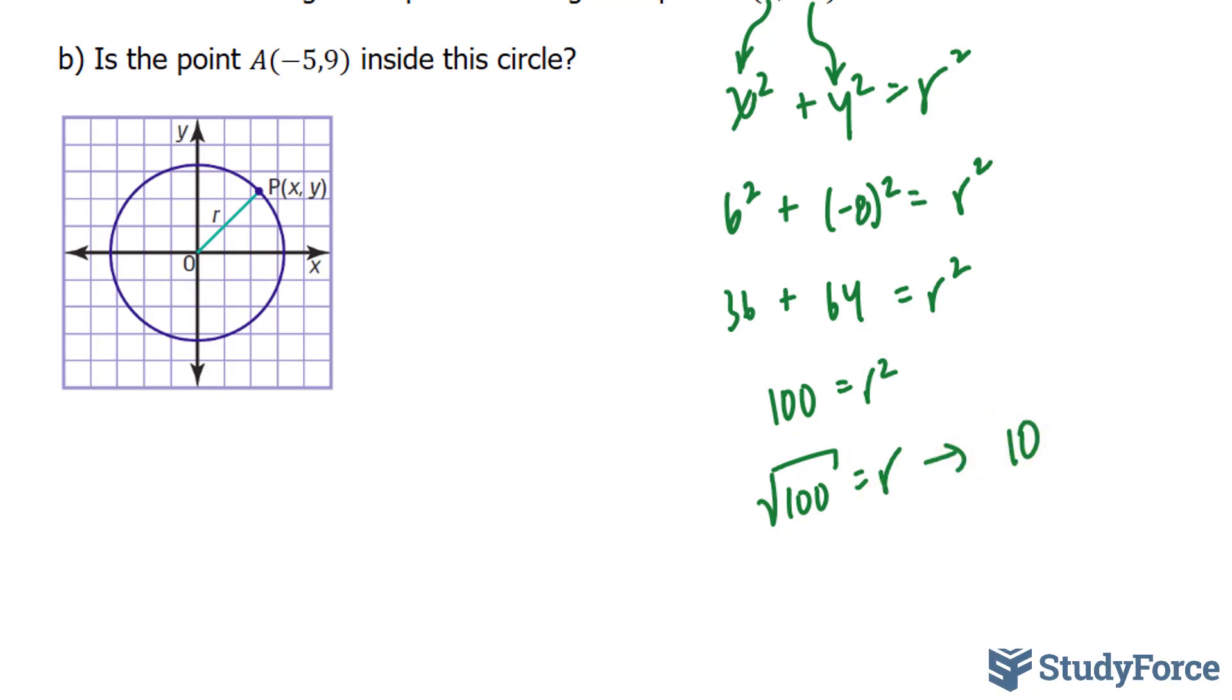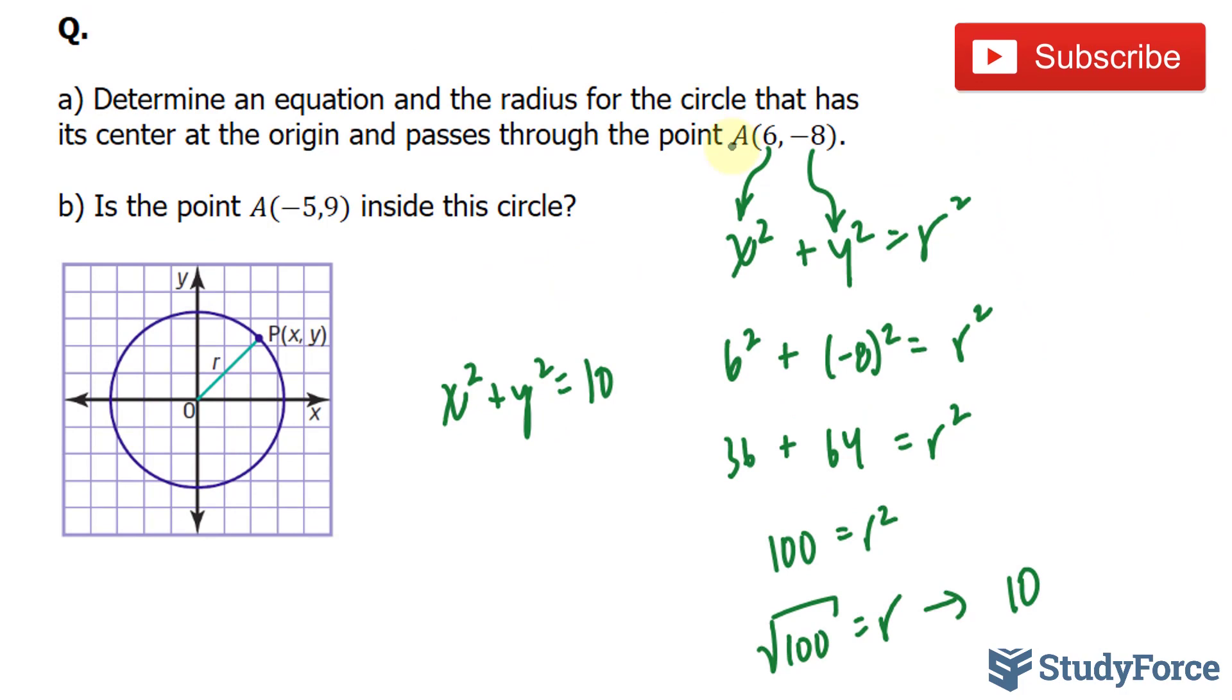So our equation would be x to the power of 2 plus y to the power of 2 is equal to 10. And that will ensure that it will pass through 6 and minus 8.